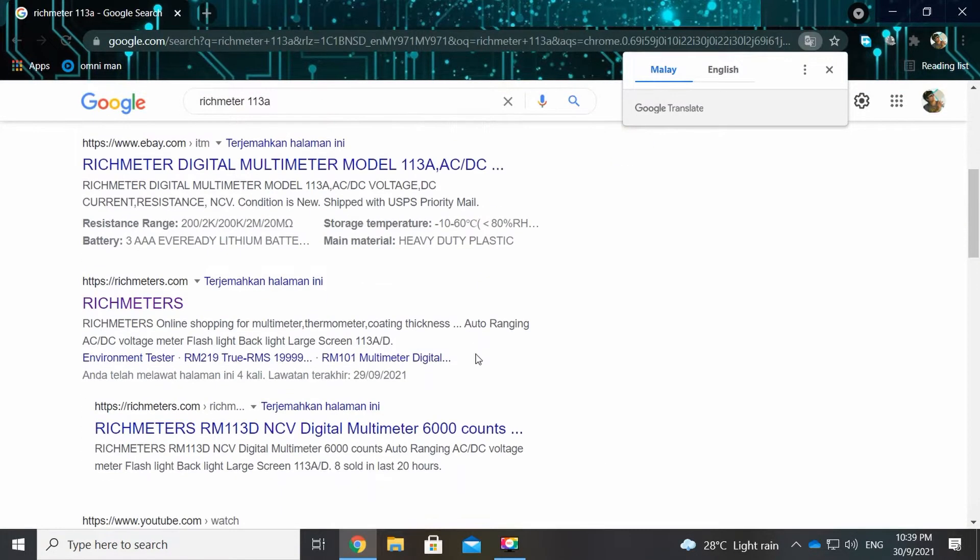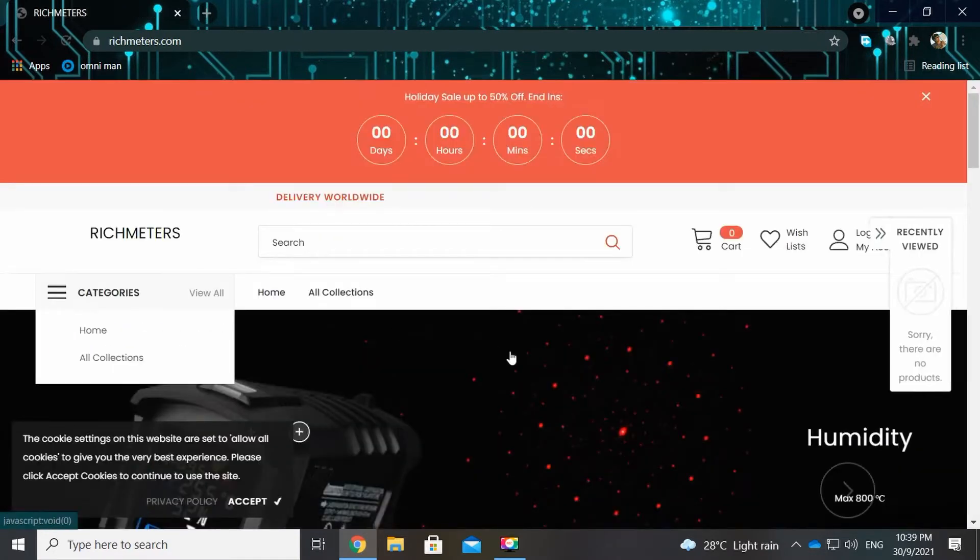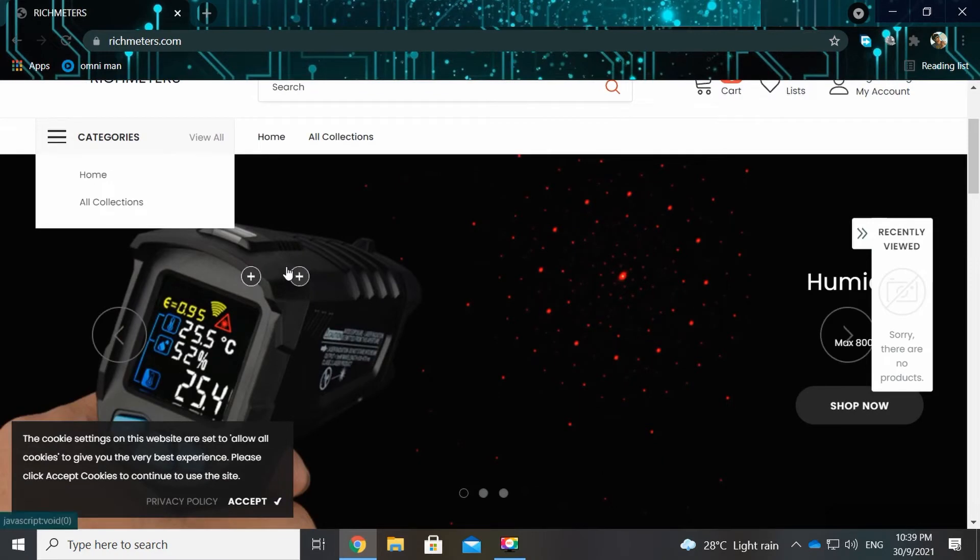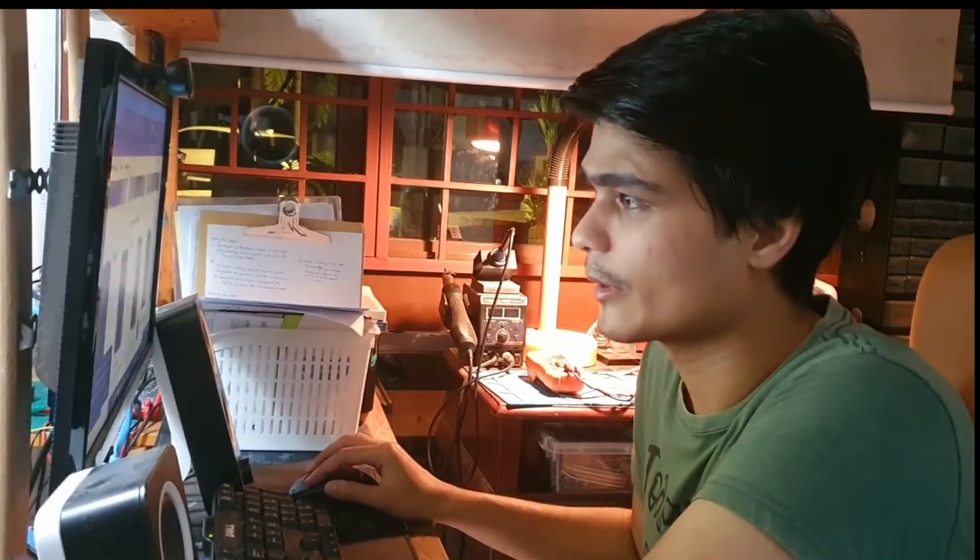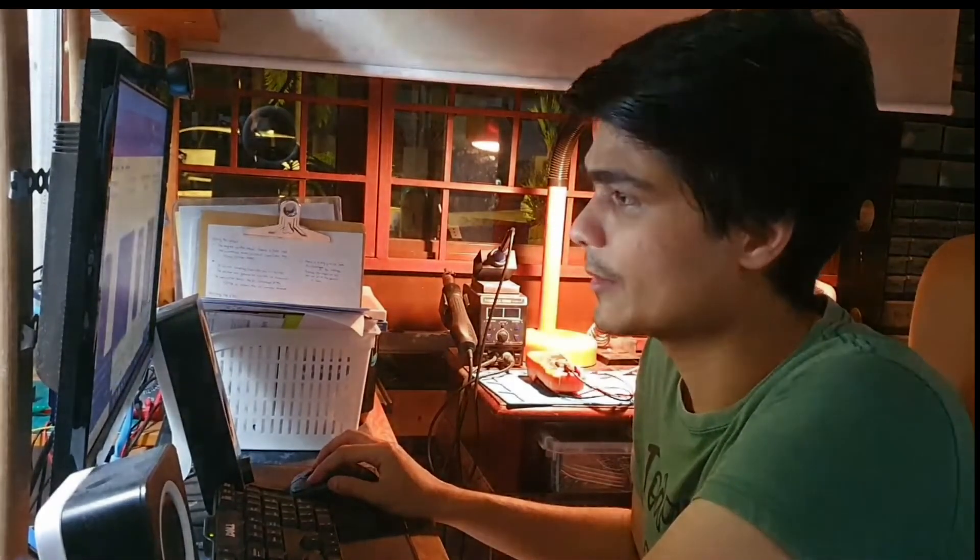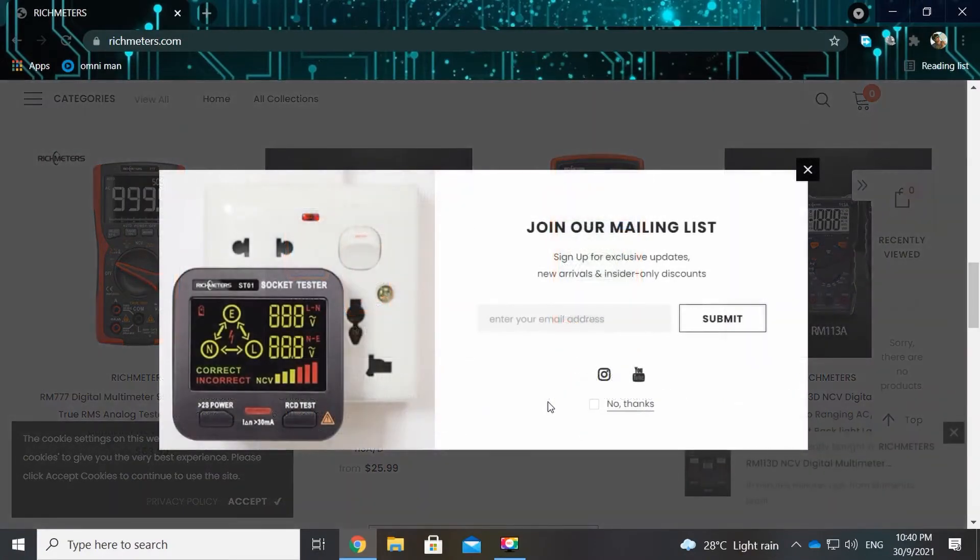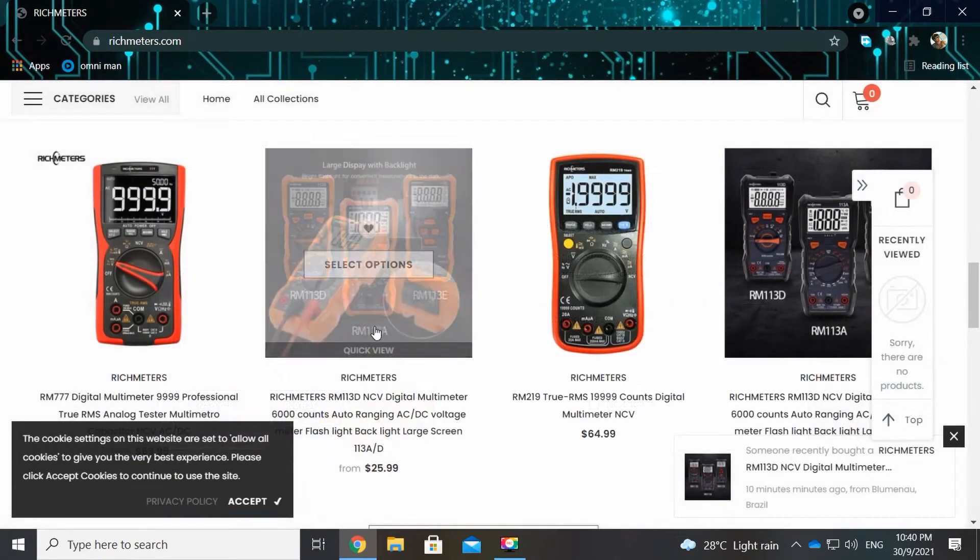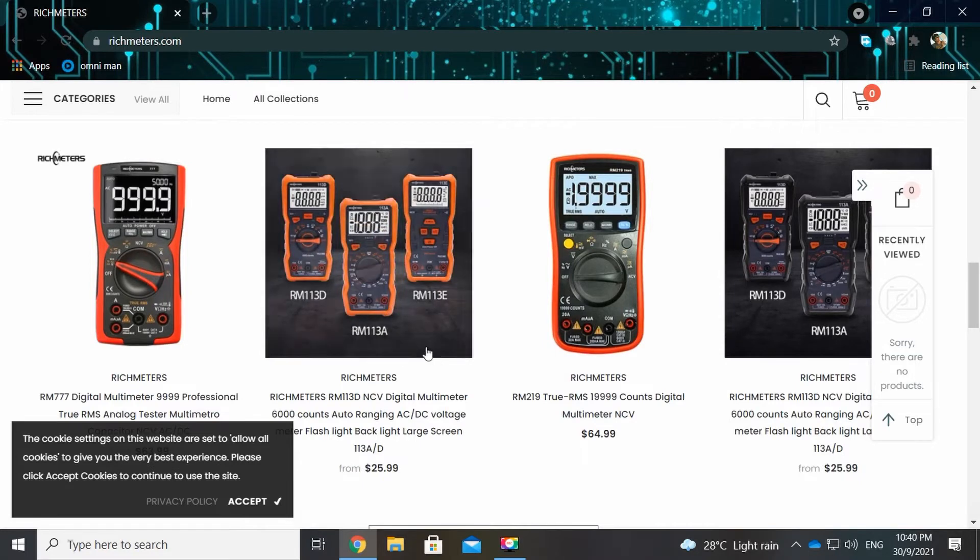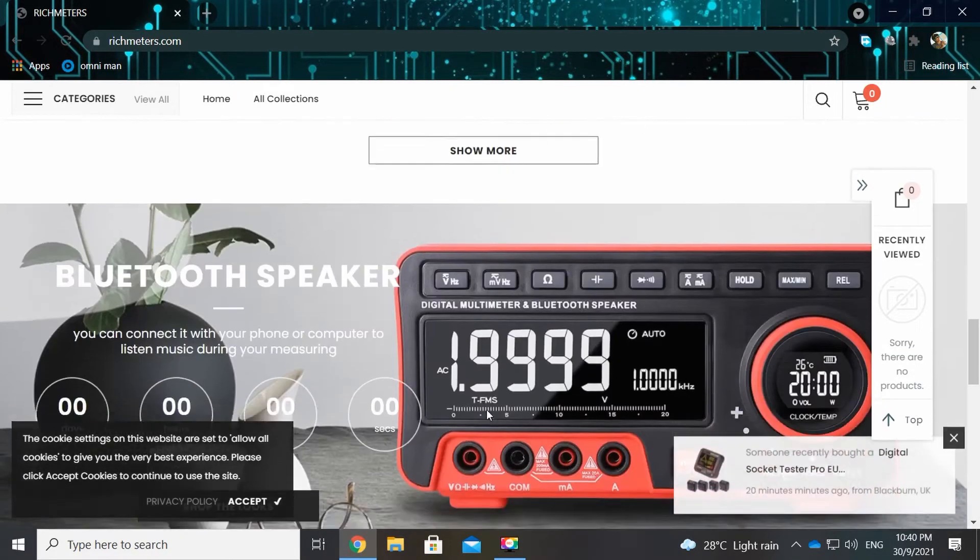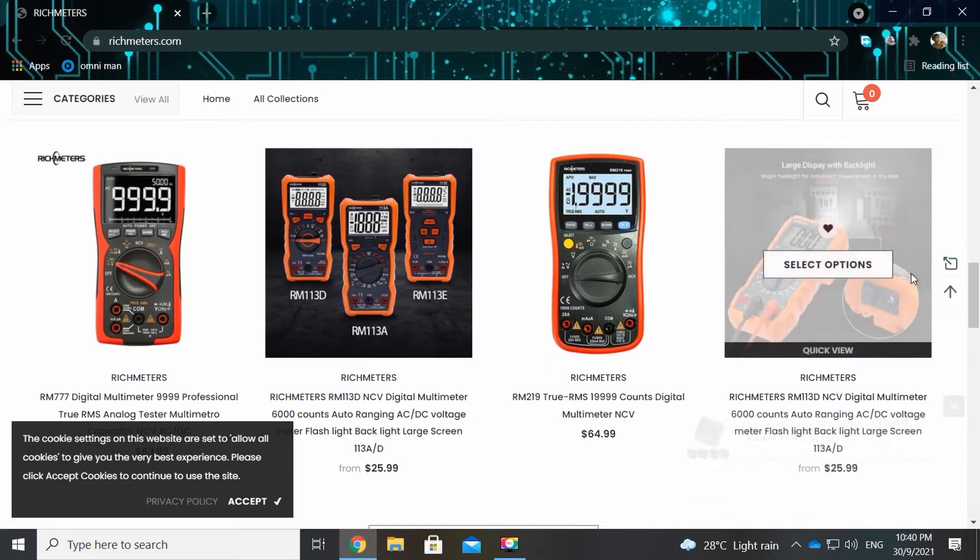I already checked the Richmeeter website before. You have some thermometer products, a couple of multimeters. This is RM - RM 113A, RM short form is Richmeeter. RM 113A, 113D, and 113E. There are a lot of products here - this one in black color looks kind of nice.